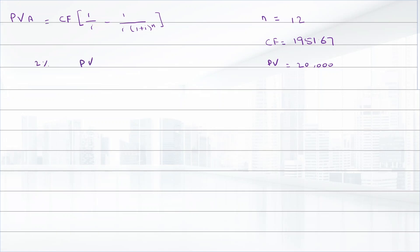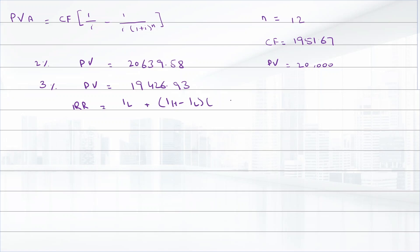At 2 percent the present value is twenty thousand six hundred thirty-nine dollars and fifty-eight cents. At 3 percent the present value is equal to nineteen thousand four hundred twenty-six dollars and ninety-three cents. After that we apply the IRR interpolation formula: i equals i-low plus (i-high minus i-low) times (PV-low minus PV-actual) divided by (PV-low minus PV-high). Putting in the values: i-low is 2 percent (0.02) plus (0.03 minus 0.02) times (20,639.58 minus the actual present value) divided by...